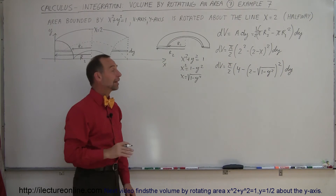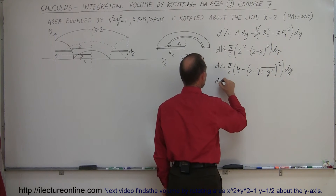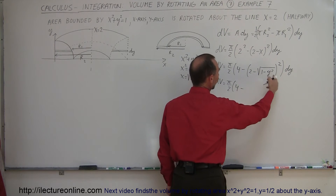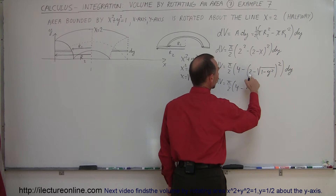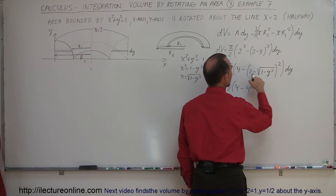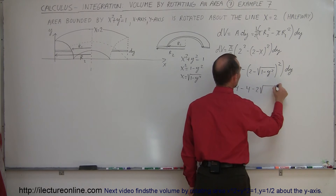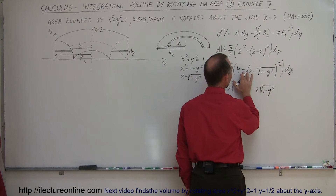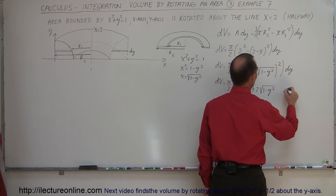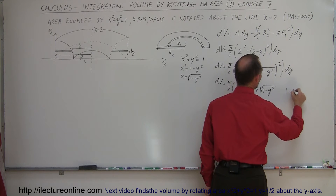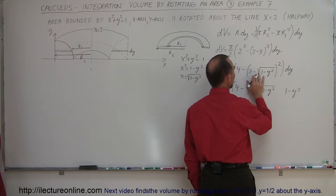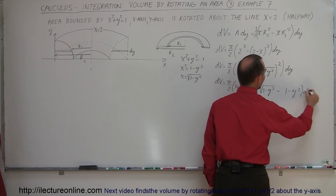Let's simplify. DV equals pi over 2 times (4 minus the expansion of (2 minus sqrt(1 minus y squared)) squared) times dy. Squaring that bracket gives 4 minus 4 times sqrt(1 minus y squared) plus (1 minus y squared). With the leading minus sign applied, we get 4 minus 4 plus 4 times sqrt(1 minus y squared) minus (1 minus y squared), times dy.